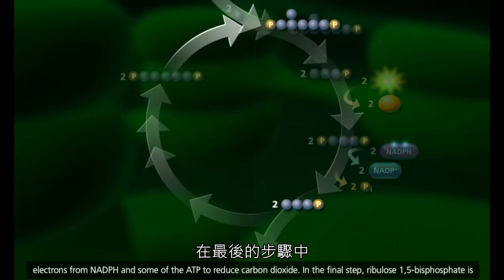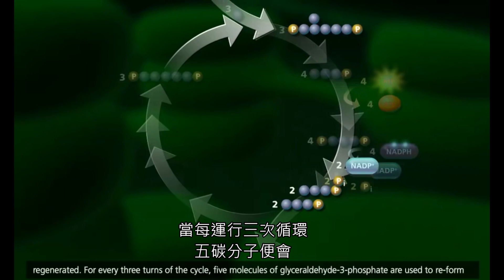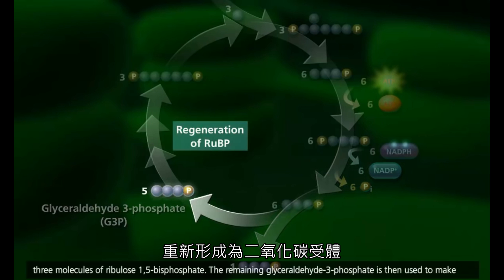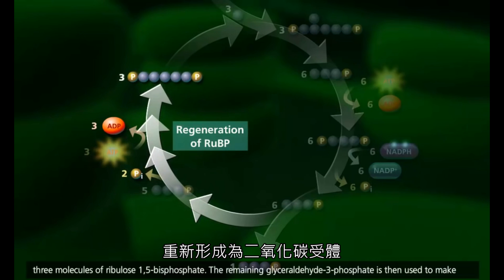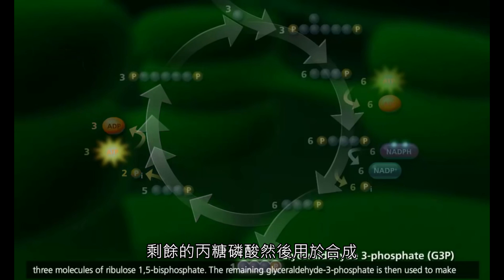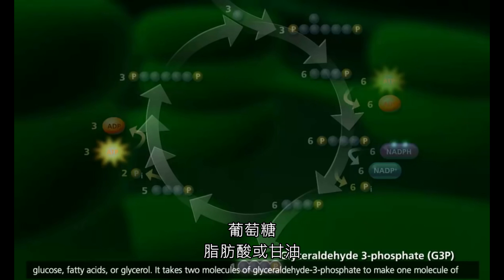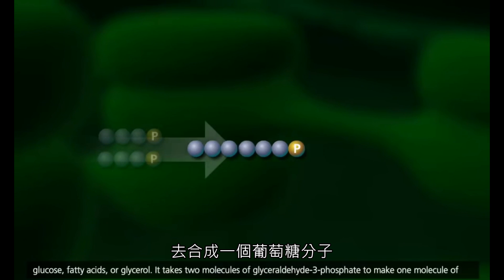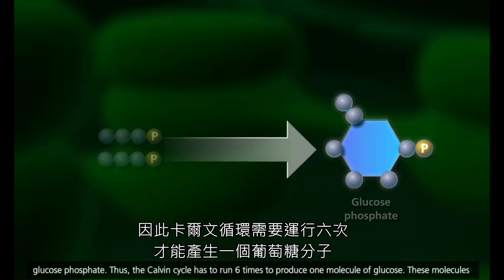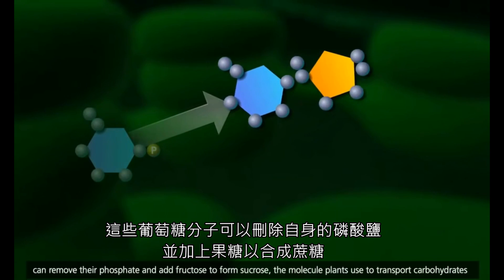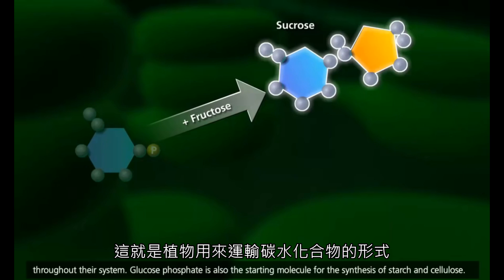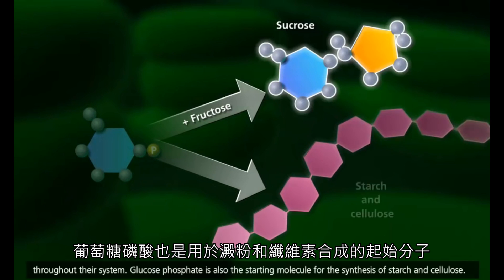In the final step, ribulose-1,5-bisphosphate is regenerated. For every three turns of the cycle, five molecules of glyceraldehyde-3-phosphate are used to reform three molecules of ribulose-1,5-bisphosphate. The remaining glyceraldehyde-3-phosphate is then used to make glucose, fatty acids, or glycerol. It takes two molecules of glyceraldehyde-3-phosphate to make one molecule of glucose phosphate. Thus, the Calvin cycle has to run six times to produce one molecule of glucose. These molecules can remove their phosphate and add fructose to form sucrose, the molecule plants use to transport carbohydrates throughout their system. Glucose phosphate is also the starting molecule for the synthesis of starch and cellulose.